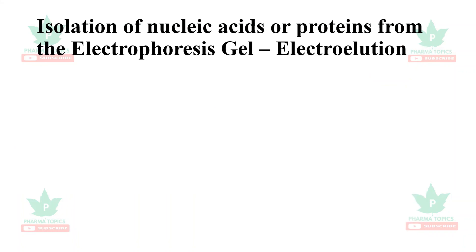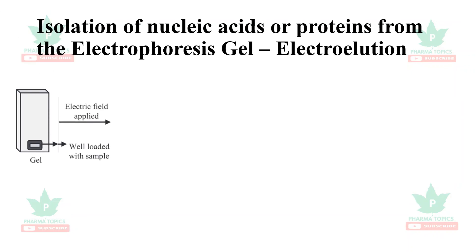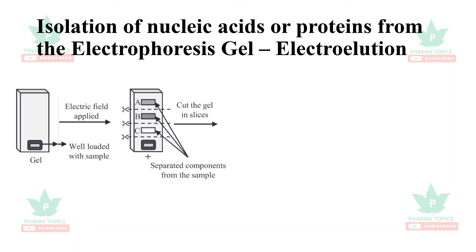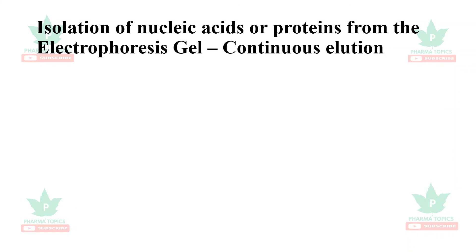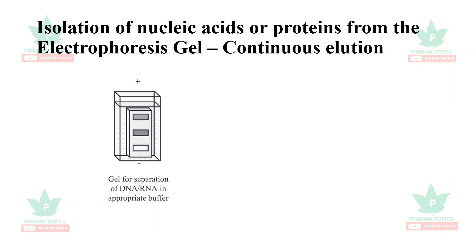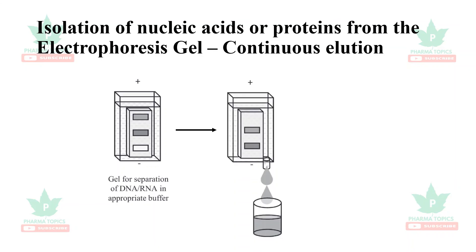Another technique is electroelution, which is similar to passive diffusion — components are separated and the gel is cut into slices, but here an electrical field is re-applied. The gel slice is fixed in a box containing buffer, and the electrical field drives components out; the buffer solution is then collected and precipitated to obtain the components. A third technique is continuous elution, where separated bands are placed in appropriate buffer and allowed to run continuously for individual separation.